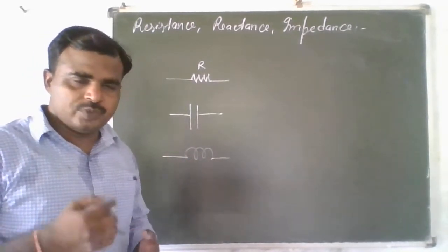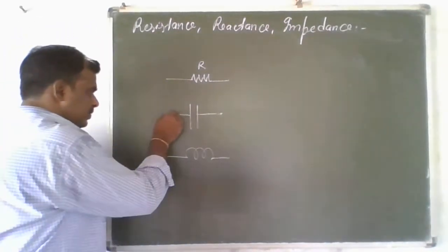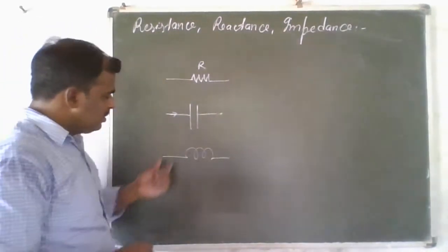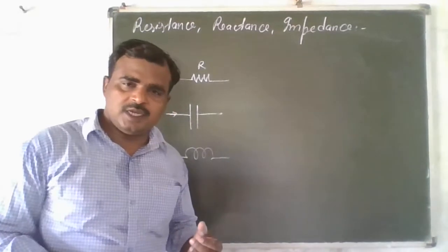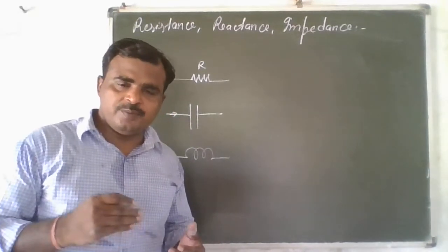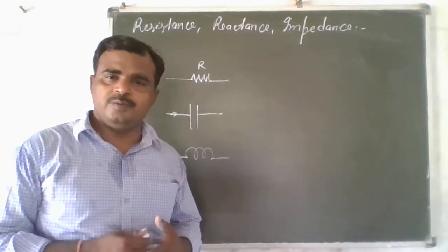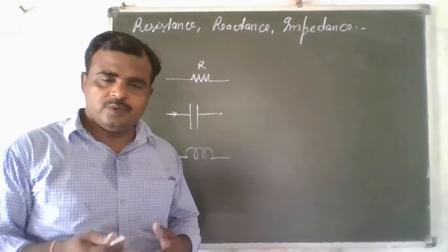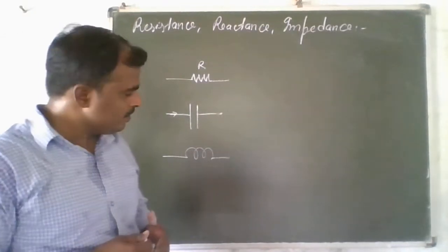How does a capacitor oppose current? If current is flowing through a capacitor, then during charging or discharging it opposes or makes an obstacle in the flow of current. This opposition nature is known as the reactance of a capacitor.